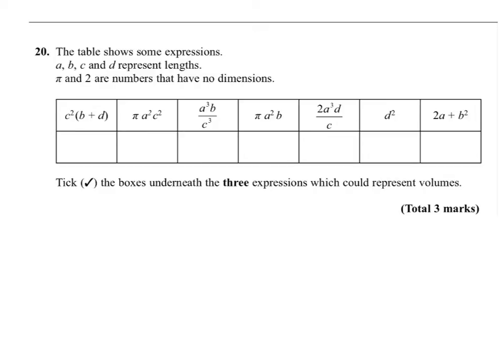We have some expressions for lengths a, b, c, d and we need to find three expressions which represent volumes. If I take the first one, c squared times b plus d, c squared would be meter squared and b is a meter length plus d is a meter length, so it's meter. That would give me m to the power of 3, which is a volume.